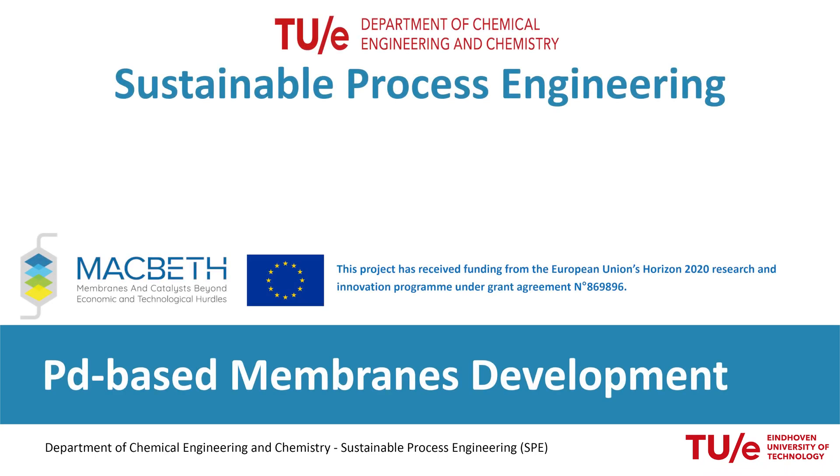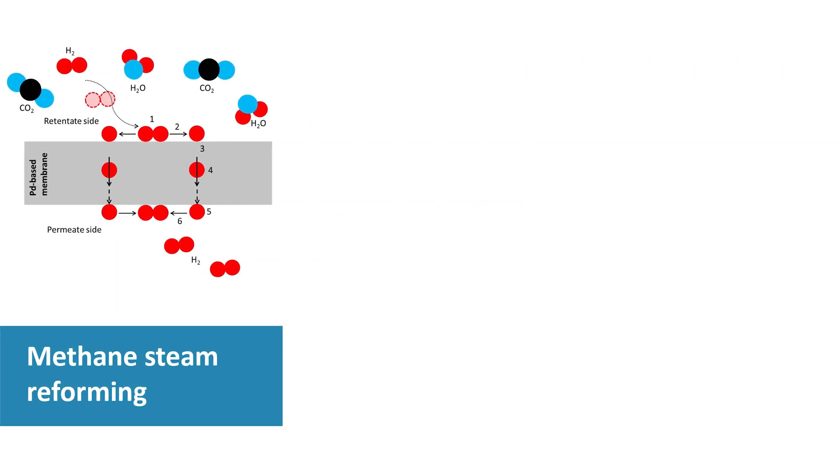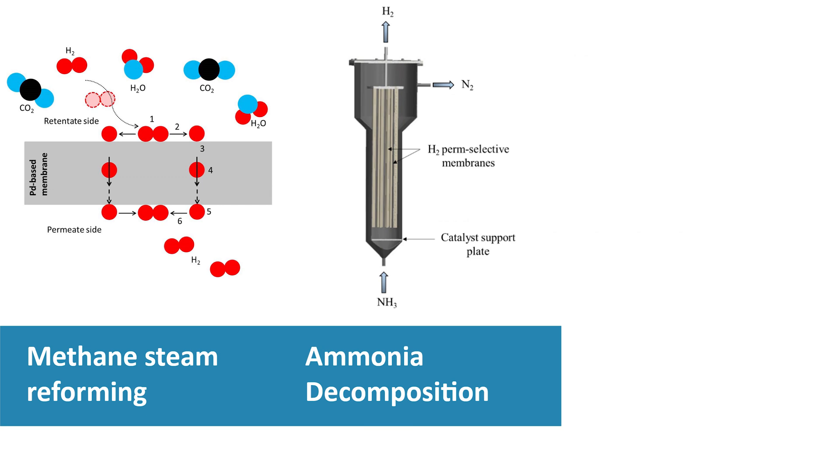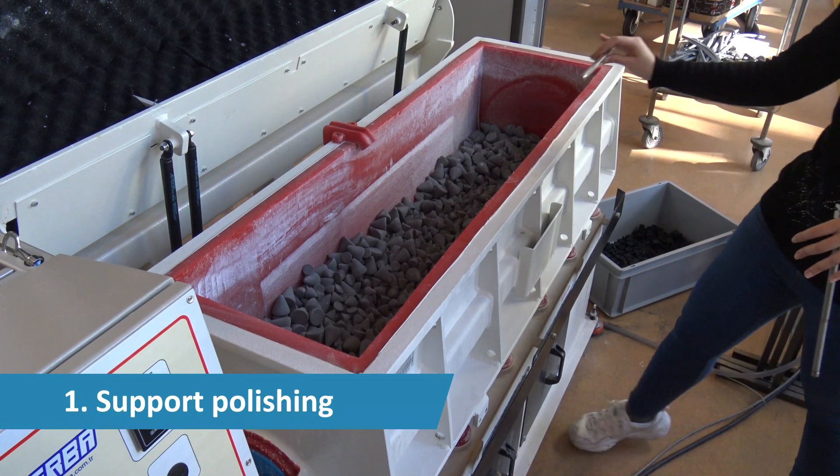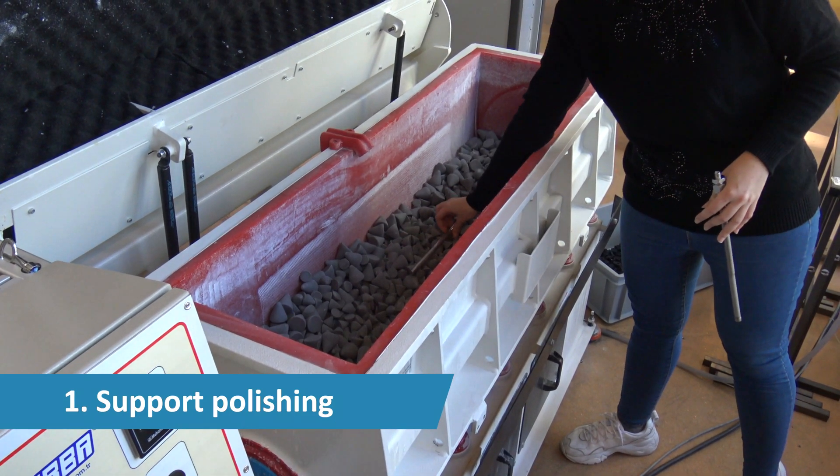Welcome to this video on palladium silver membrane preparation. These membranes are used for highly selective hydrogen separation and find applications in membrane reactors with remarkable performance. First, the metal support is polished to reduce surface roughness.